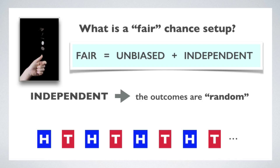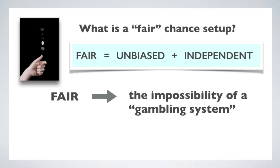Now all of this starts to sound like we're defining the concept of a random sequence, and that's exactly right. This is a way of defining randomness. We say that if outcomes are genuinely independent, then the resulting sequence is a genuinely random sequence. So now we have some concepts that we can use to clarify what we mean by a fair chance setup. We say that a fair chance setup is one for which it is impossible to construct a gambling system.